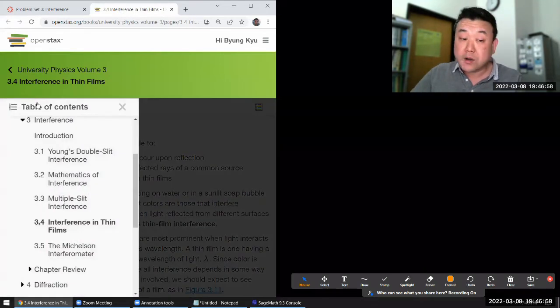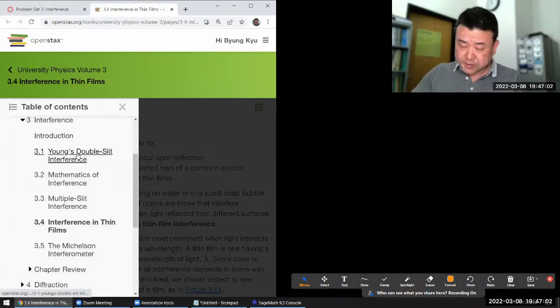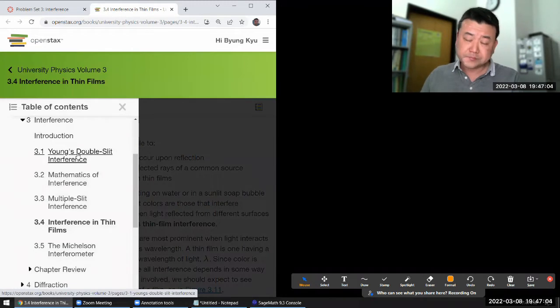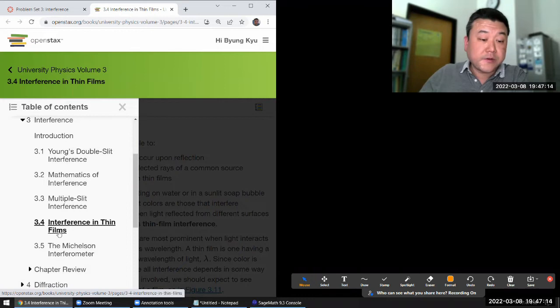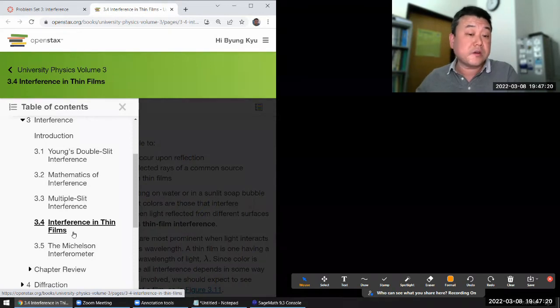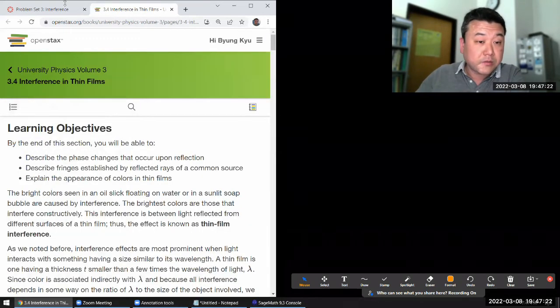In what we covered last week, we've done double slit, which has two sources based on the two slits that the light can go through. And the other example where you have multiple light sources is interference in thin films. The multiple sources come from reflections on different surfaces. That's what we are working through here.